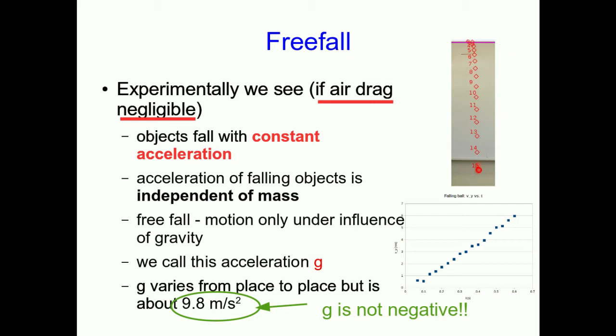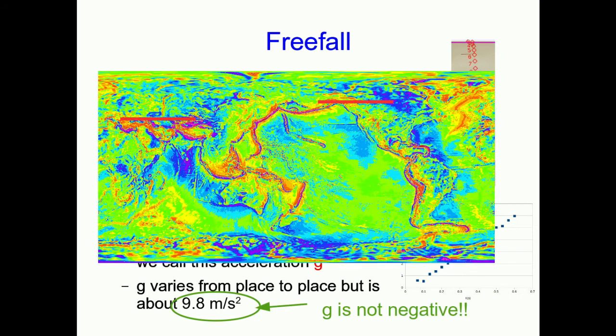You'll find textbooks often quote it as 9.81 meters per second squared, but that's a little bit silly. To two sig figs it's 9.8 meters per second squared everywhere on earth, but it does vary from place to place. Here's a map showing that variation, and the third sig fig is different depending on where you are in the world.